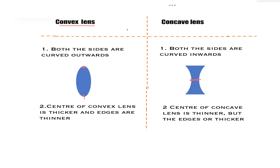To summarize: in a convex lens, the center is thicker and the edges are thinner. It is the reverse for a concave lens — the edges are thicker and the center is thinner. This is the main difference we have to keep in mind.